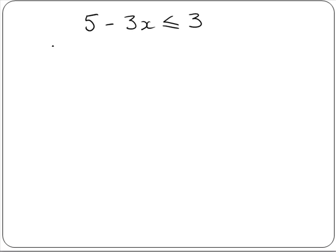So to do this, we subtract 5 from both sides. So 5 minus 3x minus 5 is less than or equal to 3 minus 5. This leaves us with minus 3x is less than or equal to minus 2.